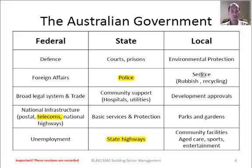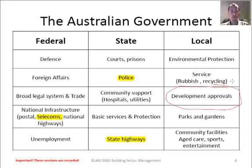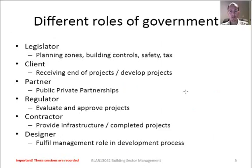At the local government level we have environmental protection services and development approvals — these are the ones we're going to see in our faces most often, as they approve our plans and work through development approvals with us. Local government is also responsible for parks and gardens, sports, utilities, and entertainment. Looking at the different roles from a government perspective, we have the legislature, planning zones, who does what, safety and security, and the ATO with taxation.